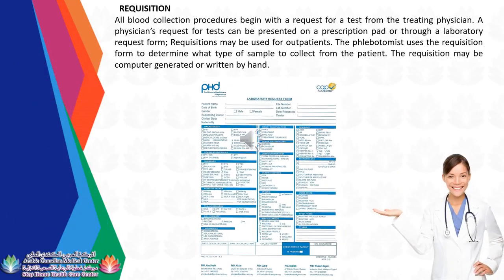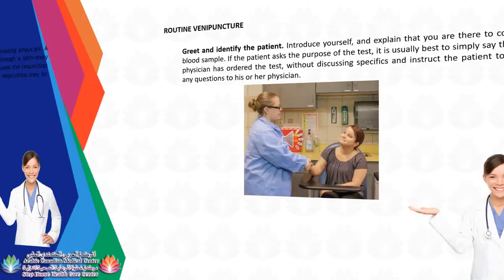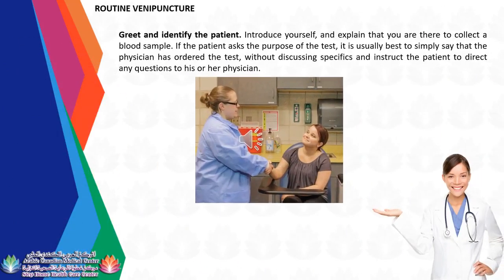All blood collection procedures begin with a request for a test from the treating physician, presented on a prescription pad or through a laboratory request form. Routine Venipuncture — Greet and identify the patient. Introduce yourself and explain that you are there to collect a blood sample. If the patient asks the purpose of the test, it is usually best to say that the physician has ordered the test, without discussing specifics, and instruct the patient to direct any questions to their physician.